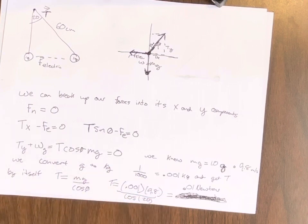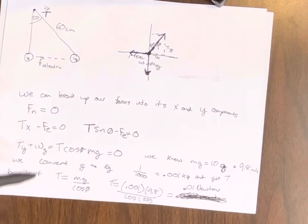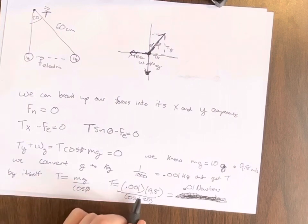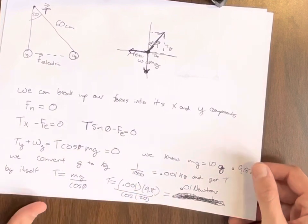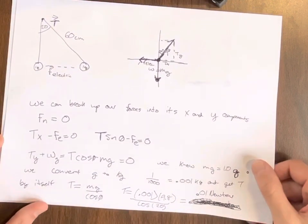So we'll say it's 0.001 kilograms, then we'll get T by itself, adding mg to zero, and then dividing by cosine theta. So tension is equal to 0.001 times 9.8 over cosine 20, which equals 0.01 newtons. So that is B, what is the tension in the string.